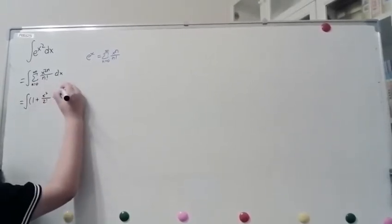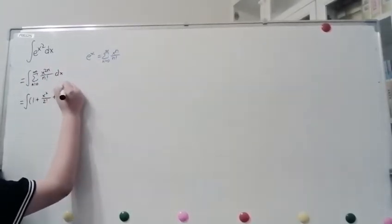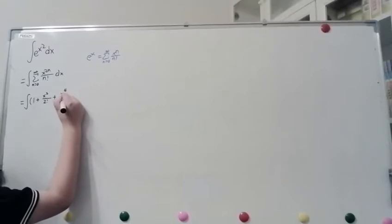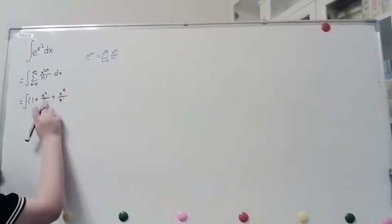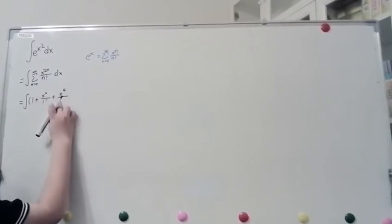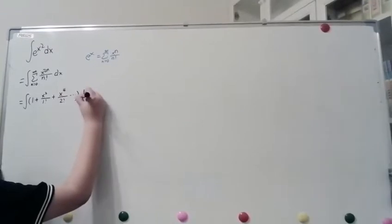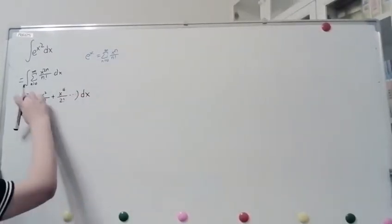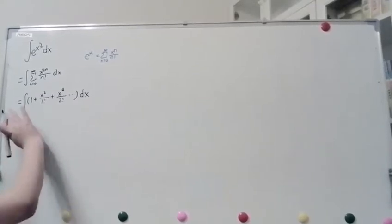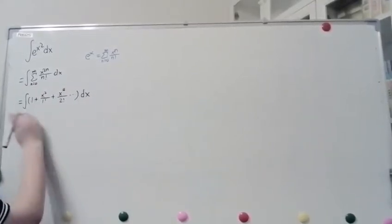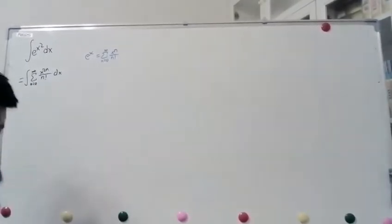So, this is now n equals 2, so we have x to the 4th over 2 factorial. Oh no, this is supposed to be 1 factorial, this is supposed to be 2 factorial, and then that goes on like this. And then, how you do this, you integrate every single term one by one, and then this will be a sum of integrals. So, really, it is okay to switch the two symbols.